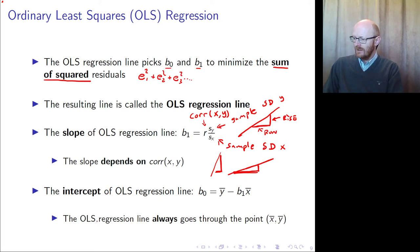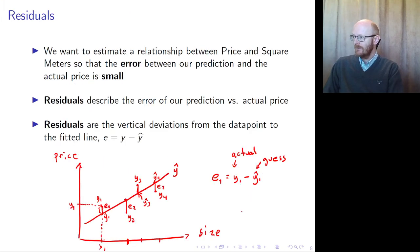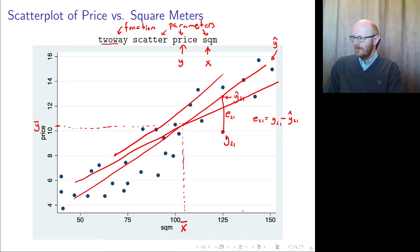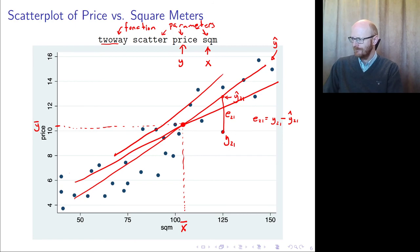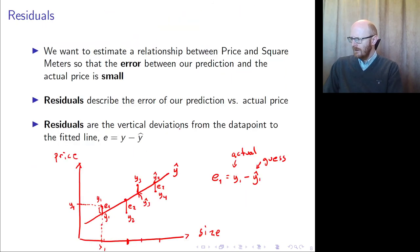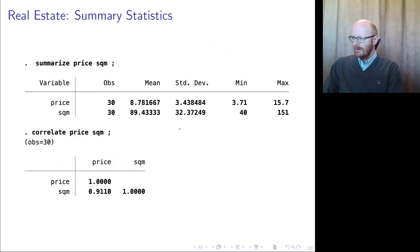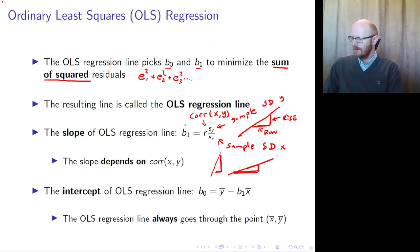The OLS regression line always goes through the point x-bar, y-bar. So we can see that the line always passes through this point, which is quite nice to know.